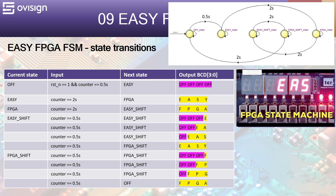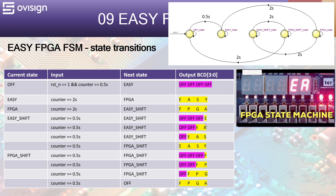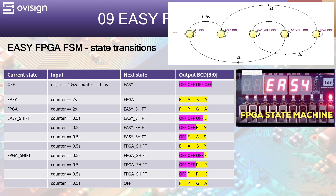In the FPGA state, all the seven-segment displays are on and they show the FPGA pattern. After another two seconds, we go into the easy shift state. In this state we display first the pattern E, then EA, then EAS, and finally EASY. Each pattern lasts for 0.5 seconds. Displaying the patterns in this order creates a shift-left effect.